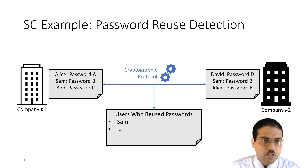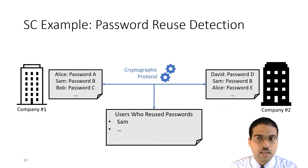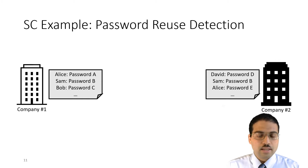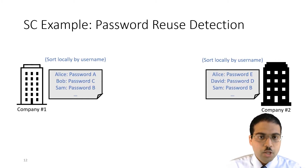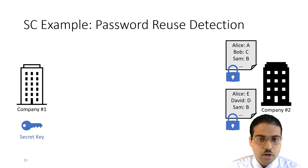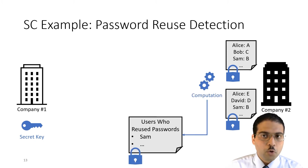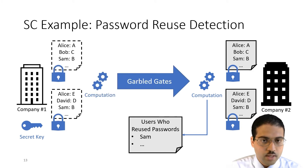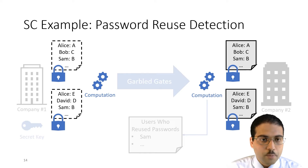Let's revisit the password reuse detection example and explain how the Garbled Circuits SMPC protocol applies. Even before beginning secure computation, the two parties can perform local preprocessing — in this case, sorting data by username. In the Garbled Circuits protocol, the parties use oblivious transfer so the second party obtains both parties' inputs in encrypted form, then computes on the encrypted data to obtain the encrypted output. The first party helps decrypt the result and at each step computes cryptographic material called garbled gates, which it sends to the second party. This computation step is what computes on the encrypted data with high memory overhead.